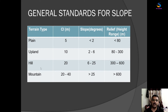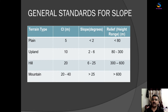In hilly areas, which are more than a plain but not full hills, the slope is 6 to 25 degrees. In mountains, the contour interval is 20 to 40 meters and the slope is greater than 25 degrees. In the next video, we will do a practical about slope and aspect so you will clearly understand how it is calculated.